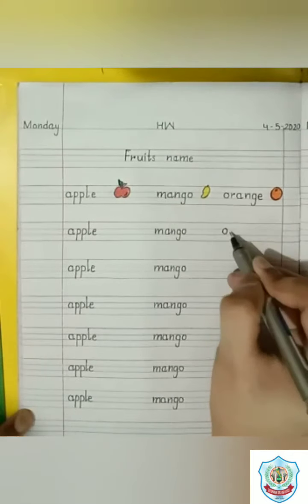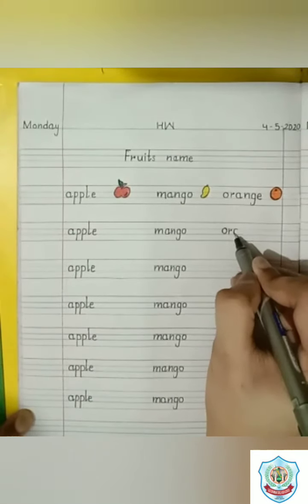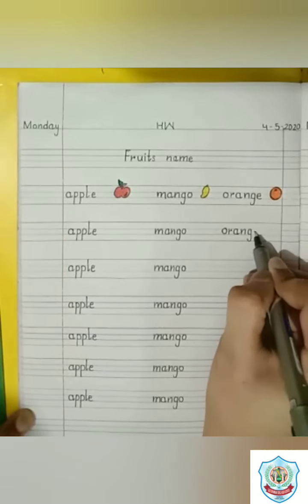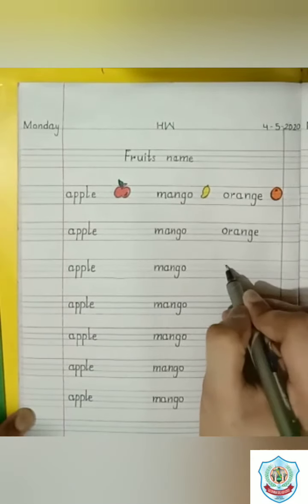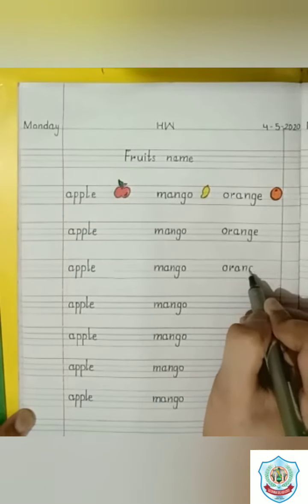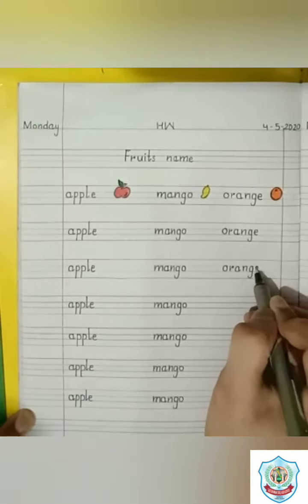Write here orange. O, R, A, N, G, E. Orange. Oh wow students, orange is a juicy fruit. And it comes in winter.